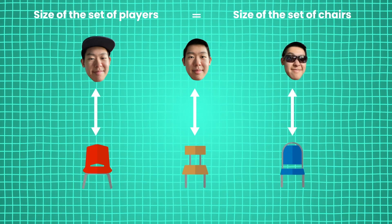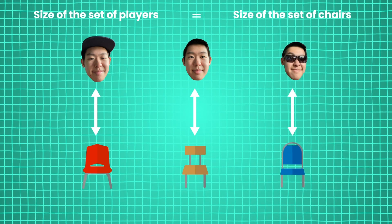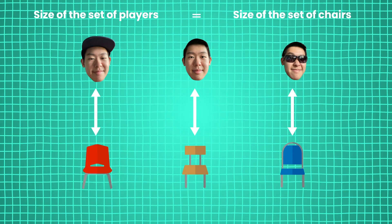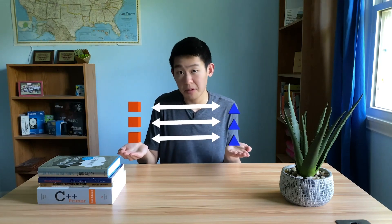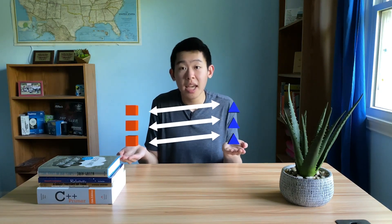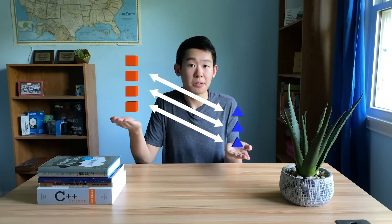If everyone had a chair to sit in, we'd have an equal number of chairs and players, and a boring game. This means to figure out if any two sets of things have the same size, all you need to do is create a unique pairing between their items. There's no need to count, and if you can't, then one set must be larger than the other.